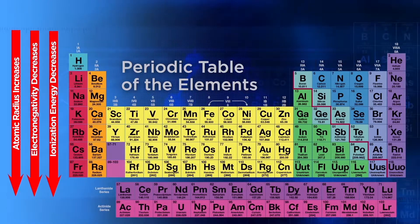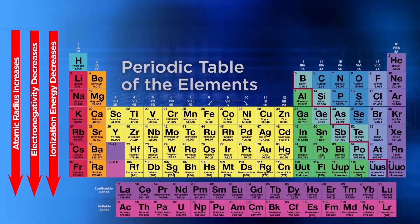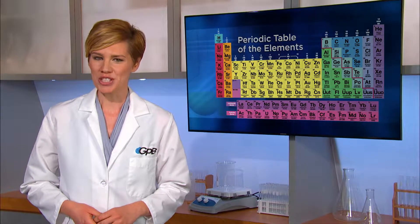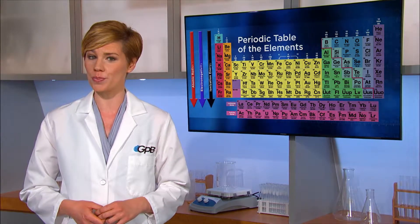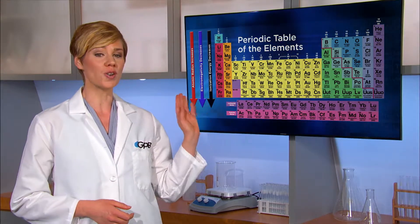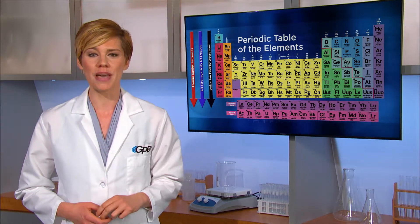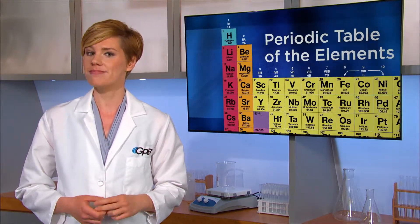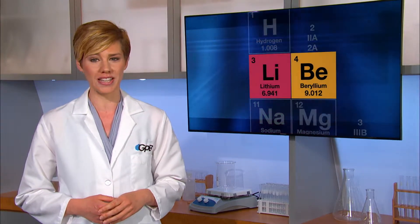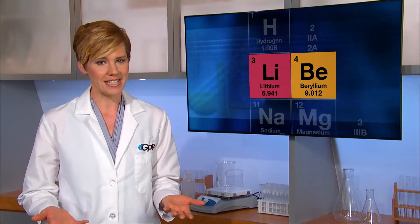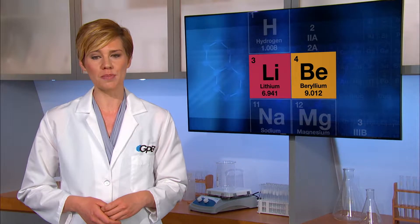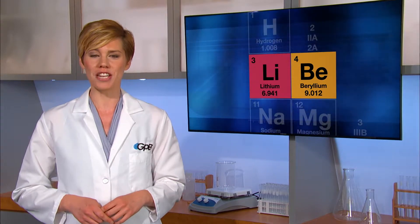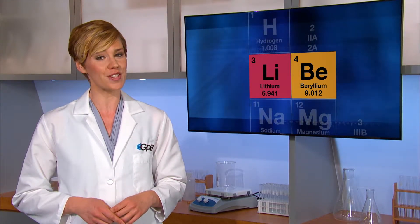And then we'll be ready to tackle the direction of these trends as we move left to right across a period. Now that we've determined the periodic trends for ionization energy, electronegativity, and atomic radius as we move down a group, let's figure out what the trends are as we move across a period. This time we'll need to compare two elements in the same period, so we'll compare the Bohr models of lithium and beryllium, both in period two. Now we need to construct a Bohr model of beryllium before we study periodic trends across a period. Back to our classroom to finish up with periodic trends moving left to right across a period.